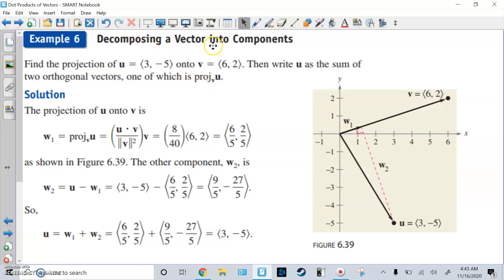All right, so we're going to decompose this vector into components. Find the projection of U at (3, -5) onto V, (6, 2). Then write U as a sum of two orthogonal vectors, one of which is the projection of U onto V. So first, we have to find W1. W1 is the projection of U onto V, which is this formula. The dot product of U times V, which is 8, over the magnitude of V squared, which would be 40. Then we're going to times that by V itself. So 8 over 40 times (6, 2) gets to (6/5, 2/5). Notice that's what this point is right here. That is 6/5, about 1.2, and 2/5, 0.4.